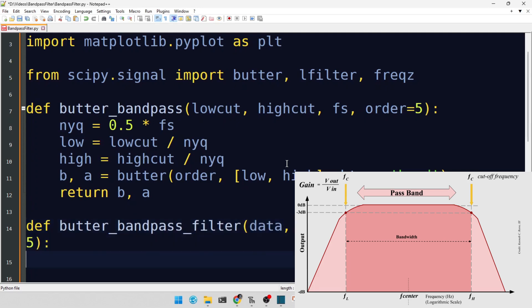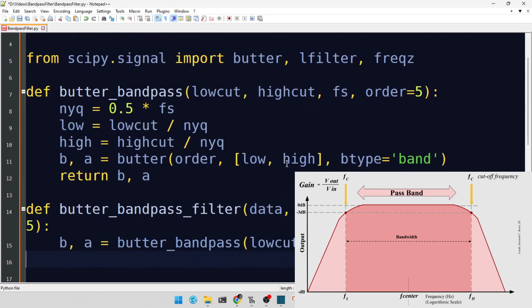First, we generate the filter coefficients with the previously defined function. And then, we use LFilter to apply these coefficients to our data, giving us our bandpass filtered signal.